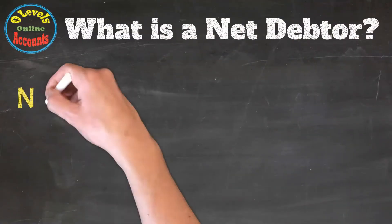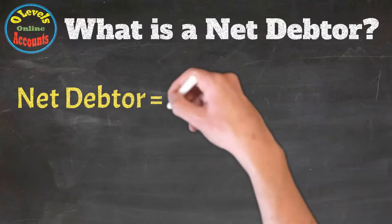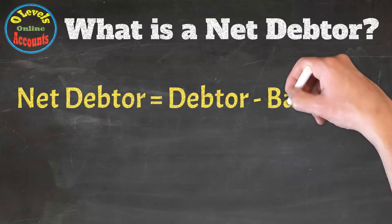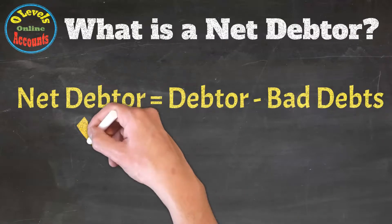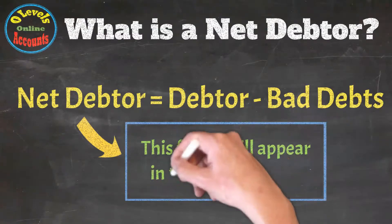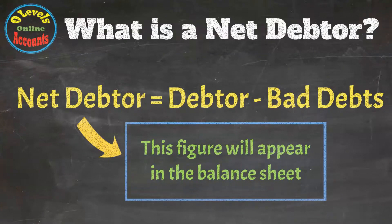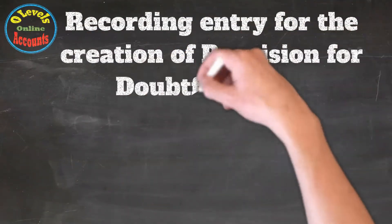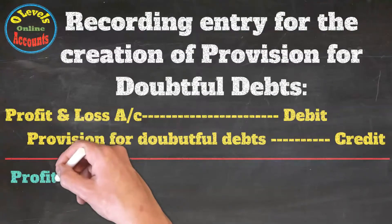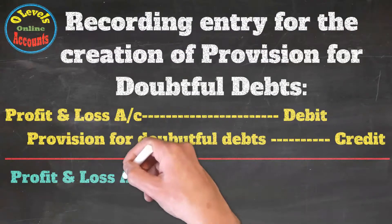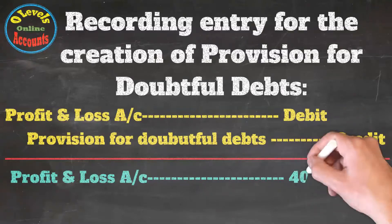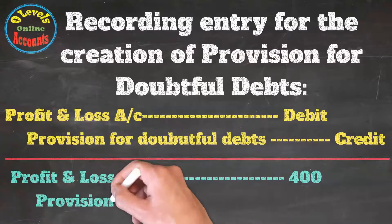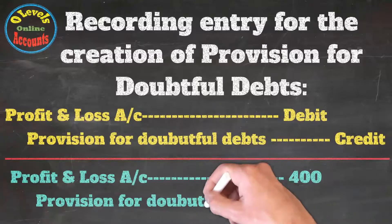What is a net debtor? A net debtor is equal to debtors minus bad debts, and this figure will appear in the balance sheet. The recording entry for the provision for doubtful debts is: debit the profit and loss account by $400 and credit the provision for doubtful debts account by $400.